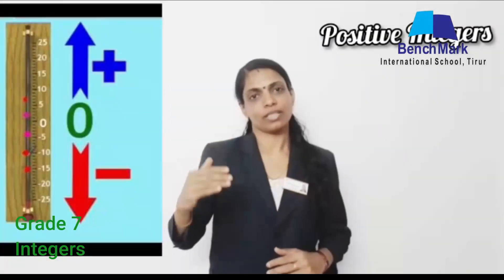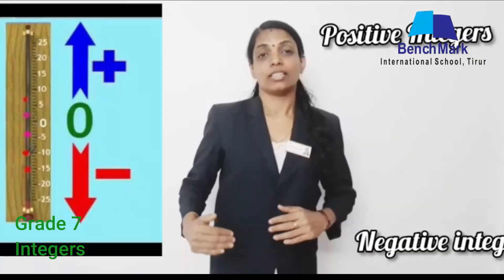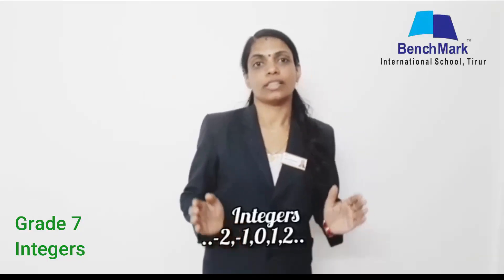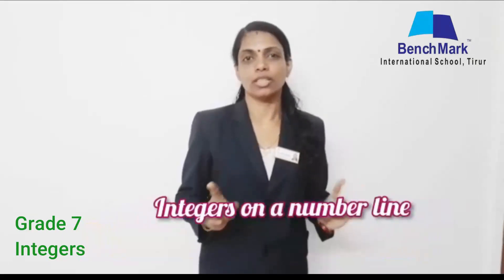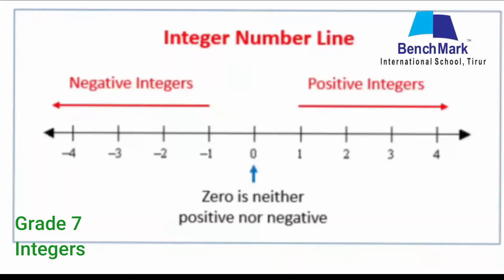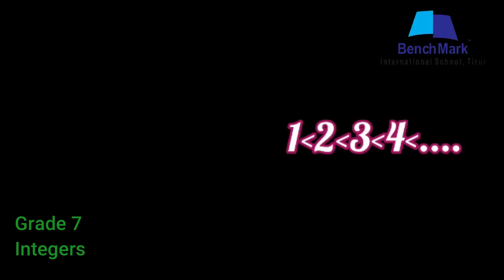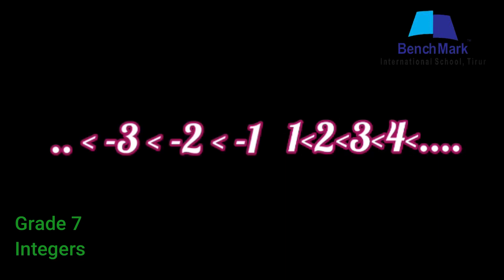The numbers above 0 are called positive integers and the numbers below 0 are called negative integers. The positive and negative integers together with 0 constitute the family of integers. It is very important to note that 0 is neither positive nor negative. Let's denote these numbers on a number line. On a number line, the numbers to the right of 0 are positive and to the left of 0 are negative. When we move to the right, the value of numbers increases, while towards the left the value decreases. This idea is used to compare integers.